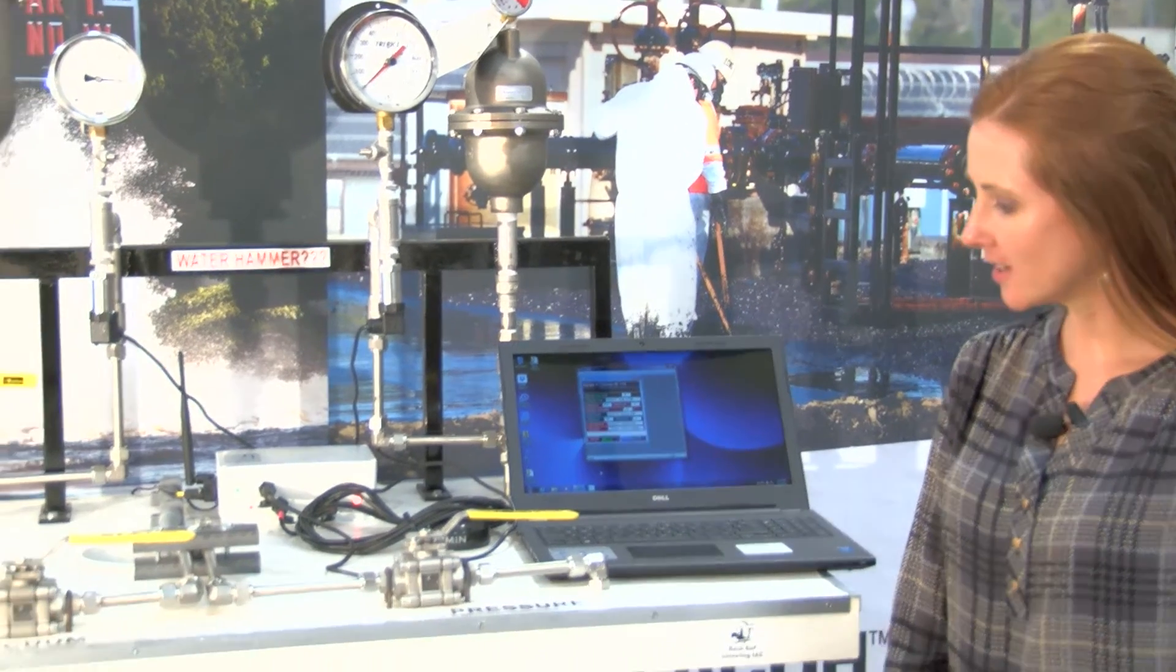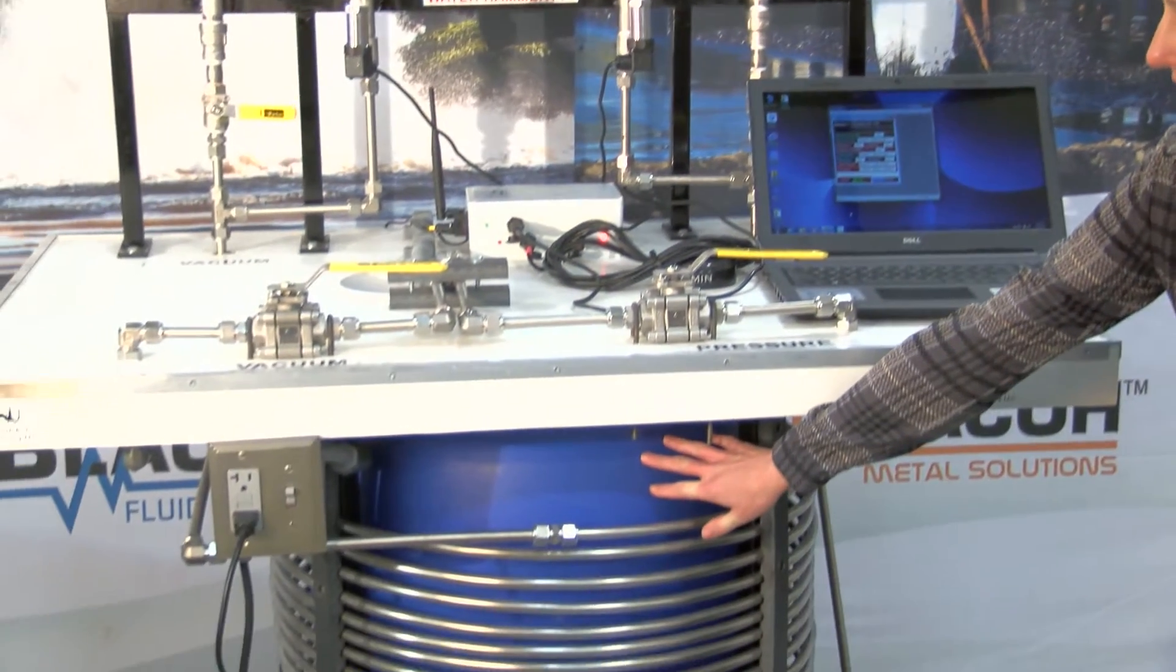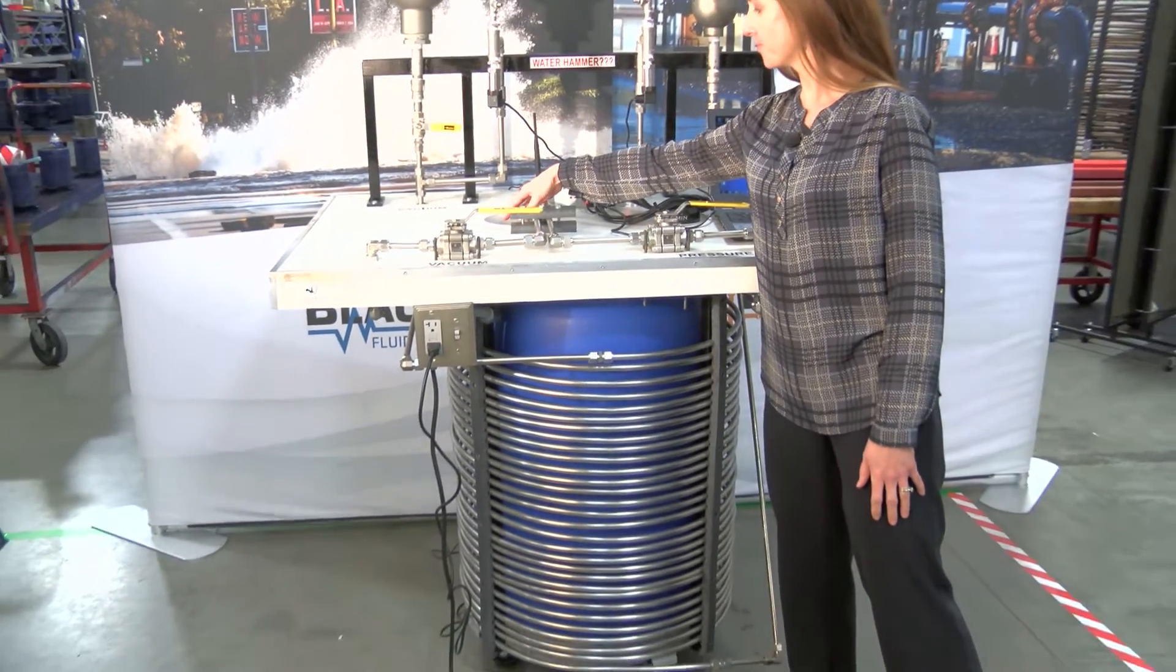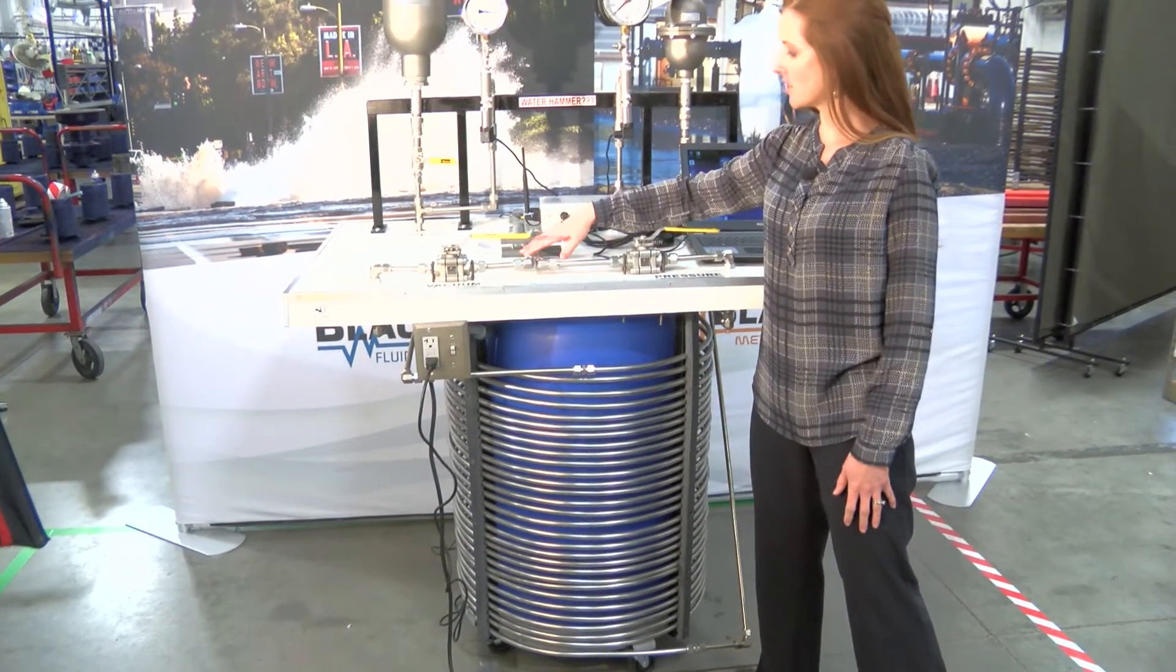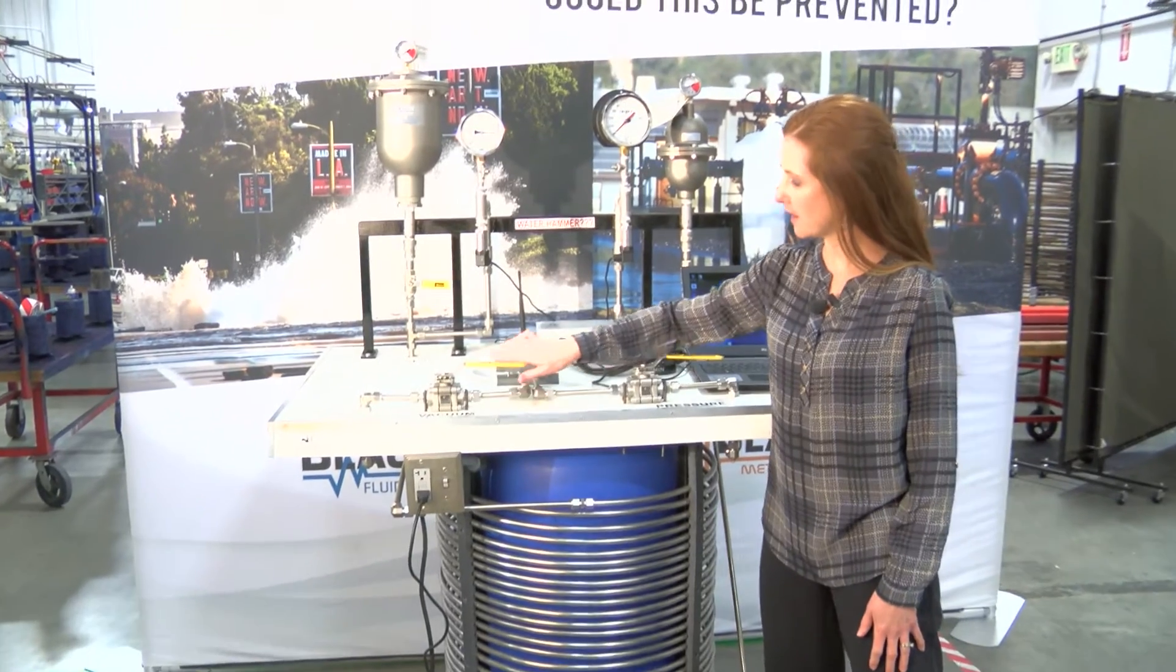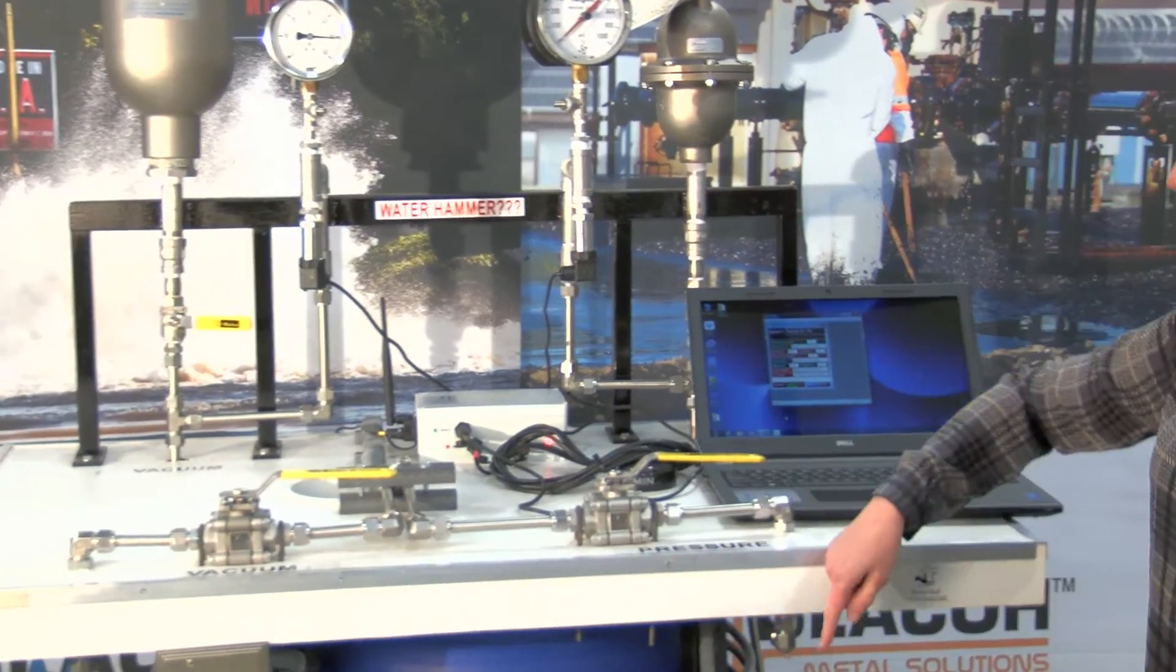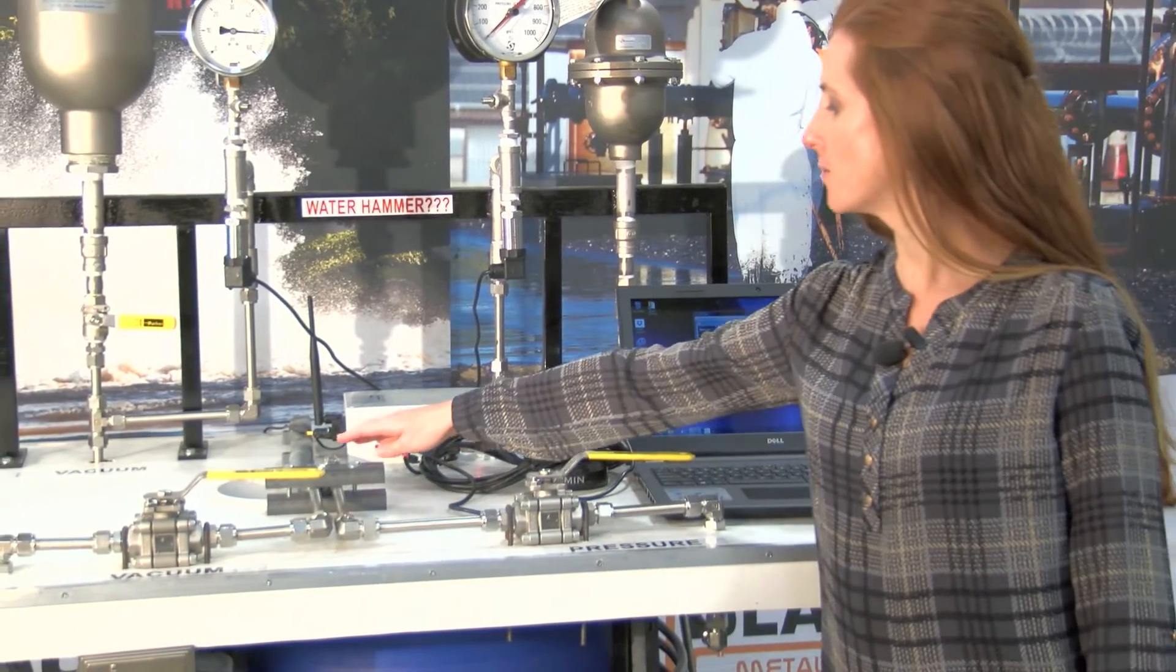What you see here is a barrel full of water with a submersible pump. We've got a discharge line of stainless steel tubing coiling around about 200 feet and then finally returning back to the barrel.